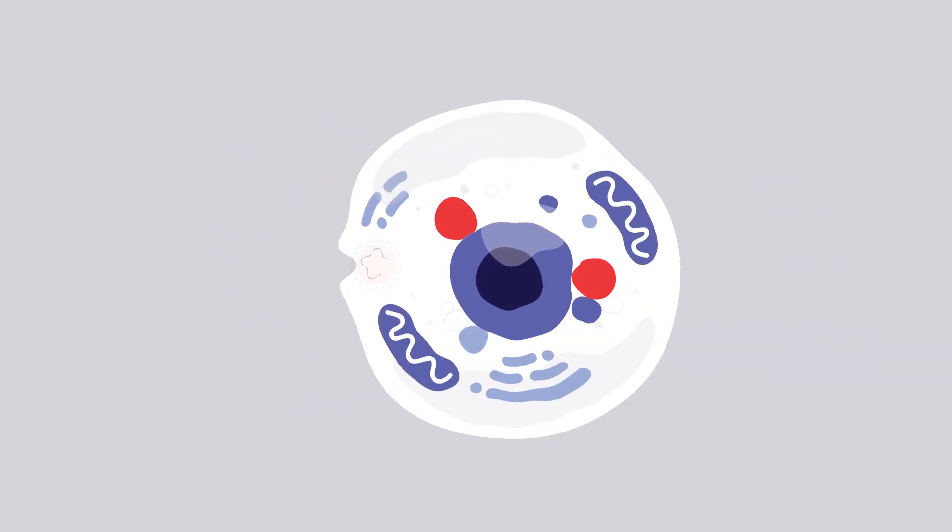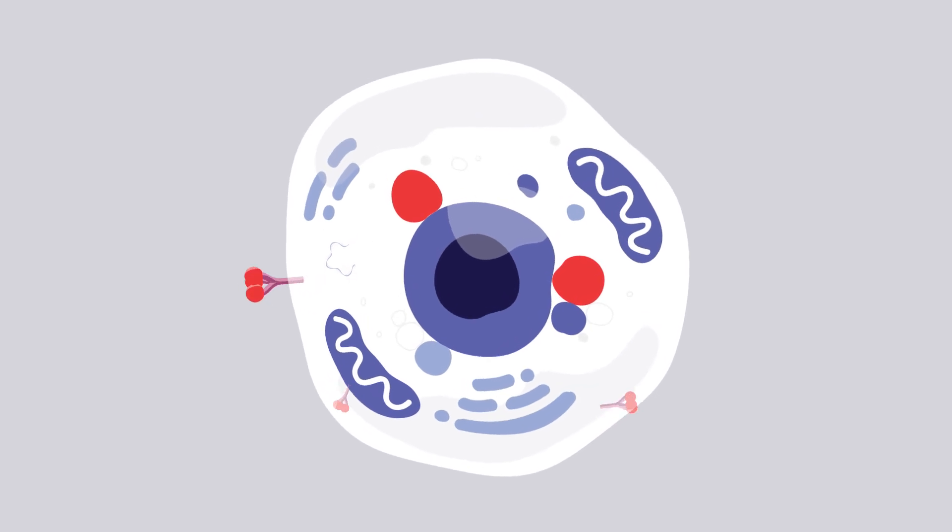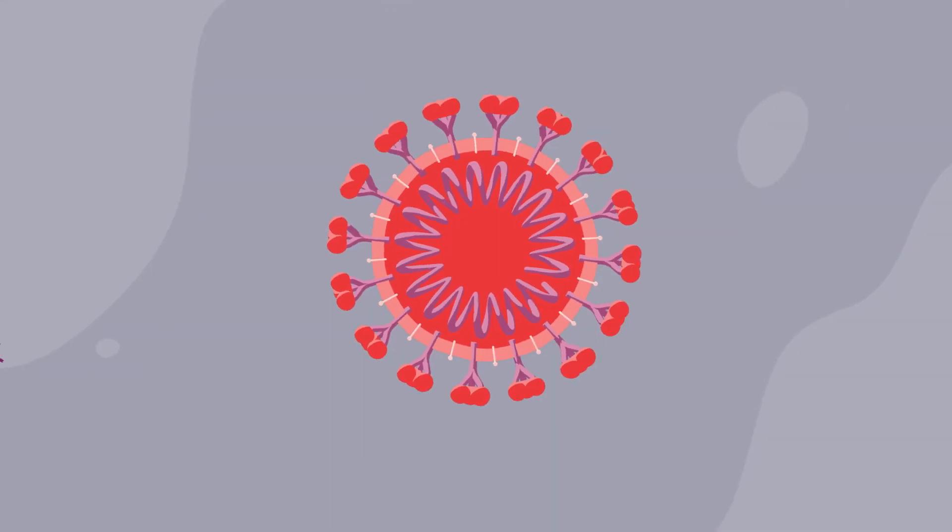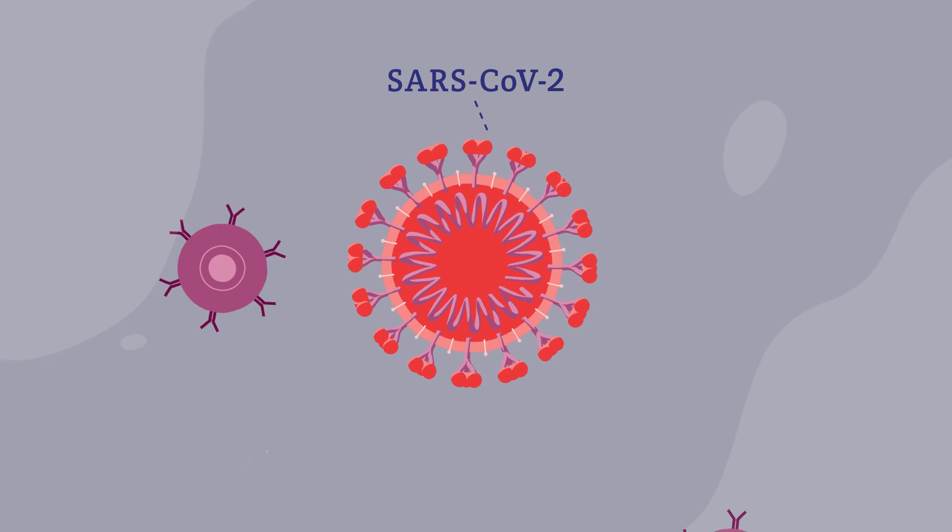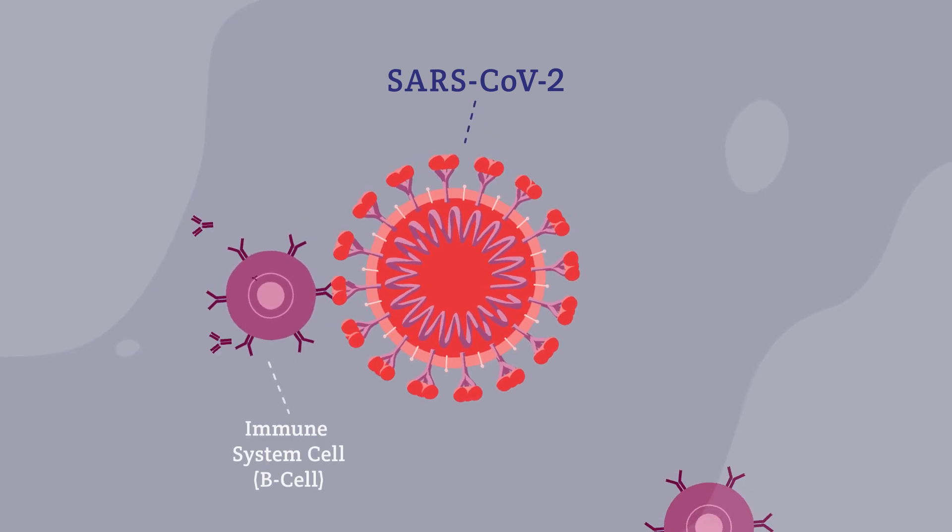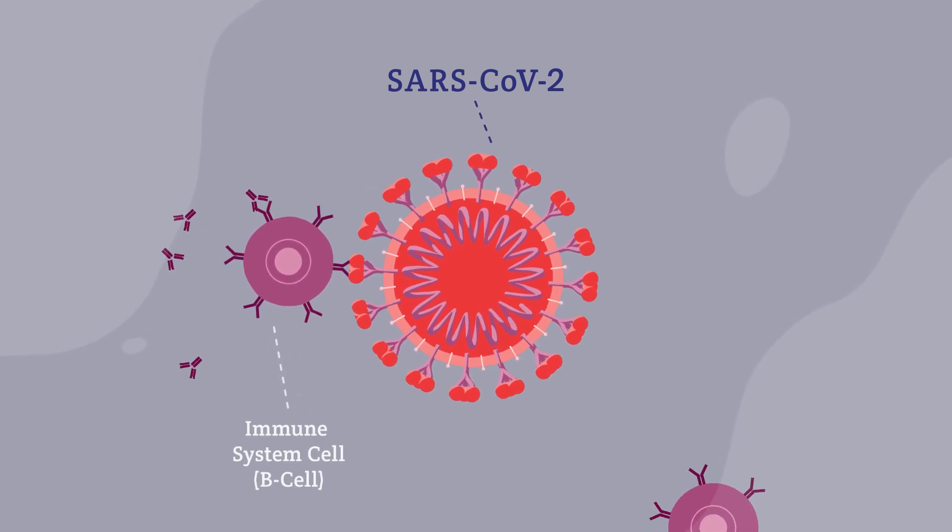mRNA vaccines deliver synthetic mRNA molecules into cells, instructing them to make antigens. An antigen is typically a foreign invader that the immune system recognizes as not being part of itself, such as the protein surface of a virus.